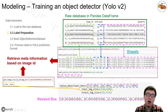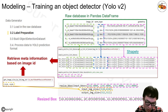Because we resized all images to 512 by 512, we also have to resize our bounding box coordinates correspondingly.